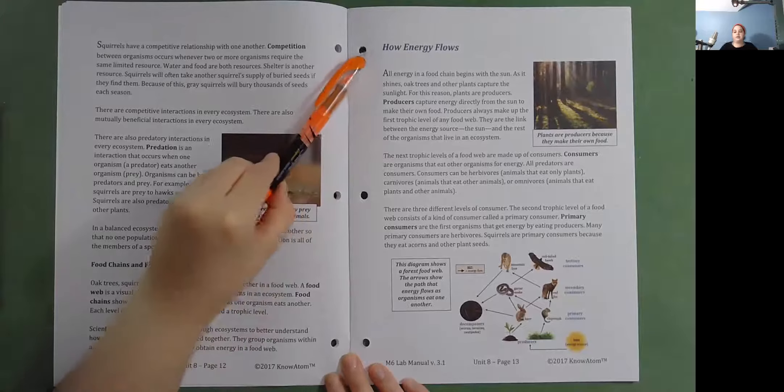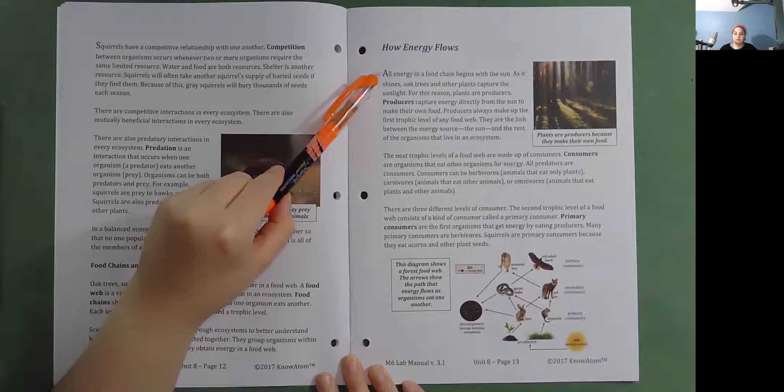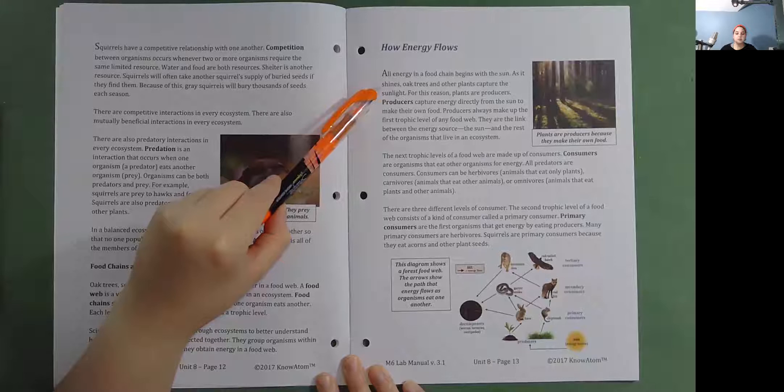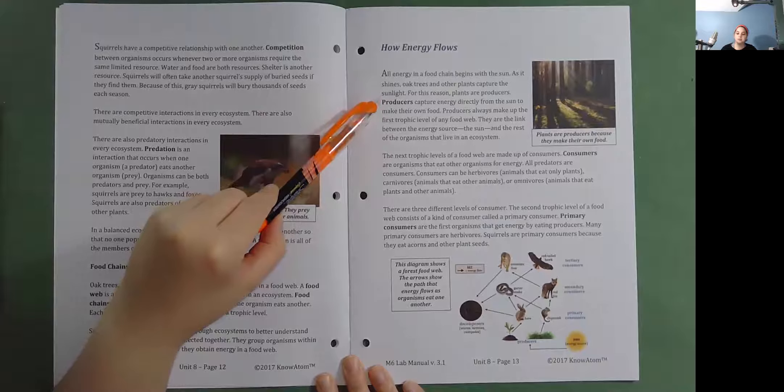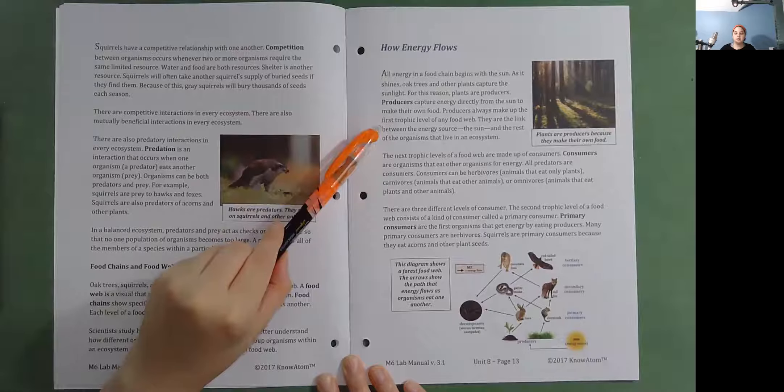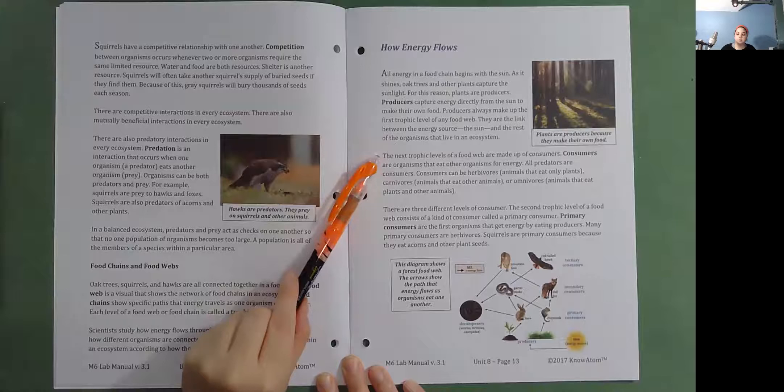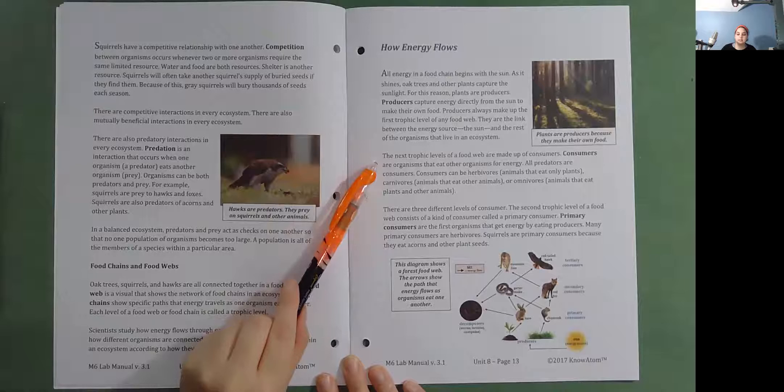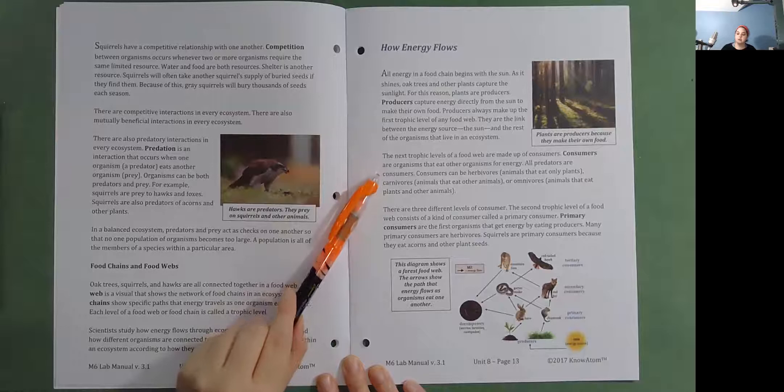How energy flows. All energy in a food chain begins with the sun. As it shines, oak trees and other plants capture the sunlight. For this reason, plants are producers. Producers capture energy directly from the sun to make their own food. Producers always make up the first trophic level of any food web. They are the link between the energy source, the sun, and the rest of the organisms that live in an ecosystem. The next trophic level of a food web are made up of consumers. Consumers are organisms that eat other organisms for energy. All predators are consumers.